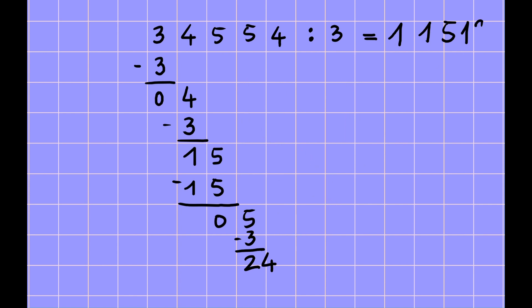And then 24, and there is zero. Now normally in German when we have a result, we always write like double lines. So the result is 11,518. In German we call it eleven thousand five hundred and eighteen. Thanks for watching my video.